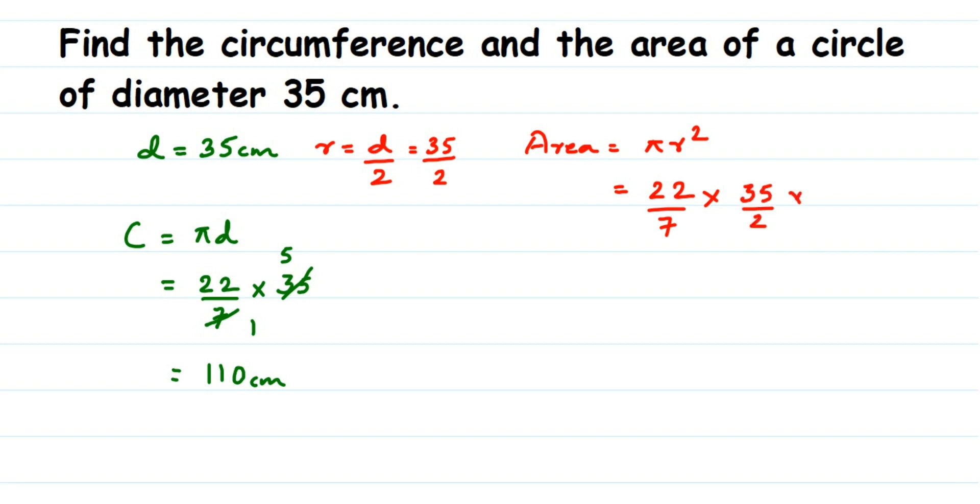We're going to cancel the numbers. Here we can cancel 7 and 35: 7 ones are 7, fives are 35. We can cancel here 2 and 22: 2 ones are 2, 11s are 22. So this is like 11, fives are 55, 55 multiplied by 35 and then divide by 2.